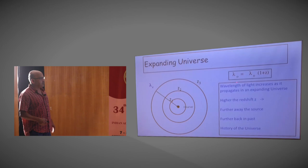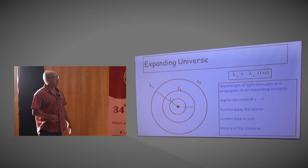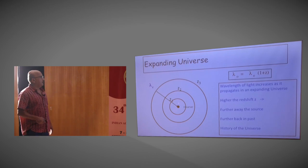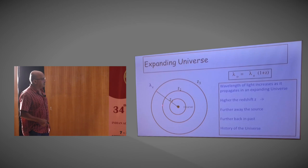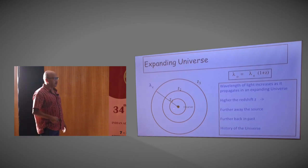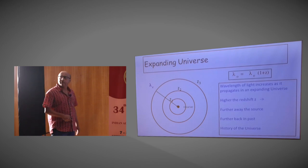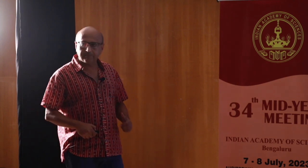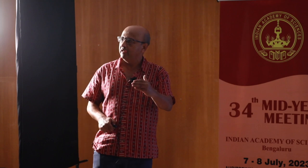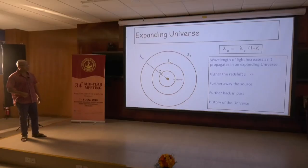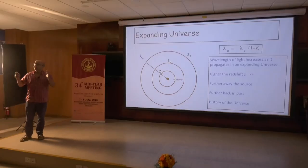We can measure this redshift sitting here. If I know the wavelength at which the light was emitted and can measure the observed wavelength, the larger the redshift, the further away the source is. Not only is the source further away, but light takes a finite time to travel, so we are looking back into the past. The higher the redshift, the further back into the past we are looking, which allows us to probe the history of the universe.